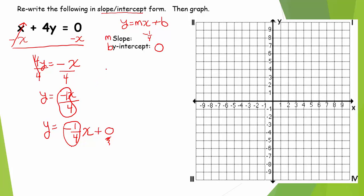Now I'm ready to graph this. Step one: we plot the y-intercept. If my y-intercept is zero, the coordinates of that point are x equals zero, y equals zero. This b gives us the y-coordinate of the y-intercept, so zero, zero is definitely on my line.